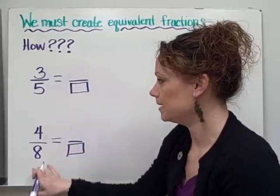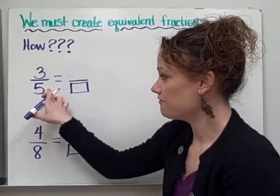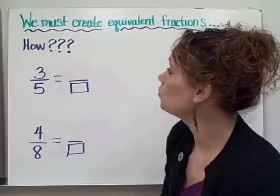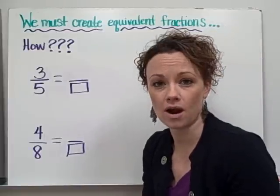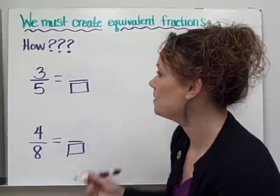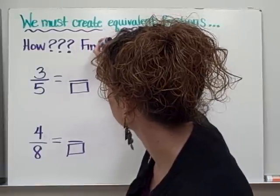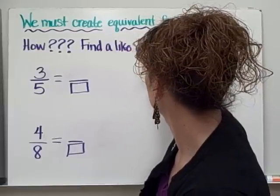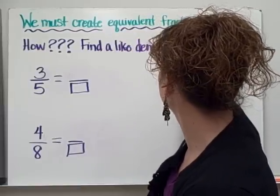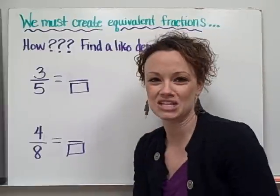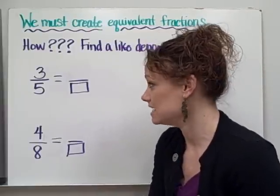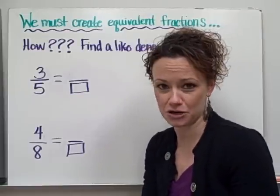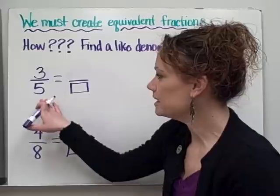So how do we do that? Well we start dealing with the denominators that we do know. So we know that we have a five for this denominator and we know that we have an eight for this denominator. So what we need to do is we need to look for numbers that they have in common. We need to find a like denominator. And the way we do that is we think about the multiplication facts of five and of eight.